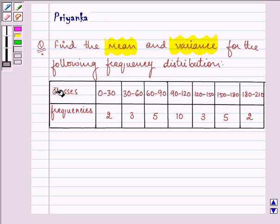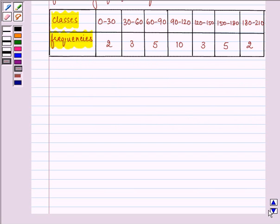Now here we are given the classes as well as the frequency. We need to apply the shortcut method for finding the mean and variance which is divided into 4 steps. So let us draw a table to make the 4 steps look simpler for us.